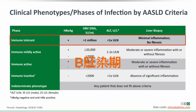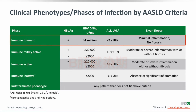Shown here in this table are the different terms used to refer to the different phases of infection. This patient, who's e-antigen positive, has a viral load greater than a million, has a normal ALT, and minimal evidence of fibrosis and inflammation — consistent with the immune-tolerant phase.